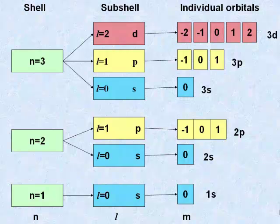Each value for M represents an individual orbital within a shell. For instance, in the shell where N equals 1, the S subshell only has one value for M. Hence, there is only a single S orbital.